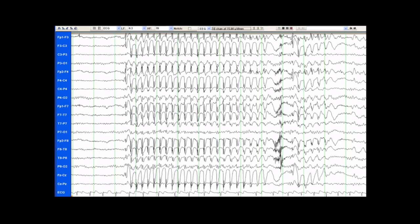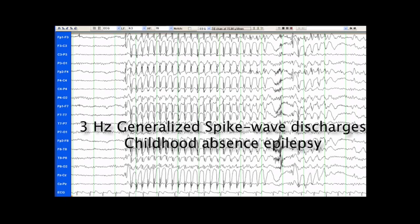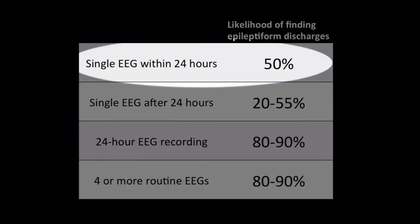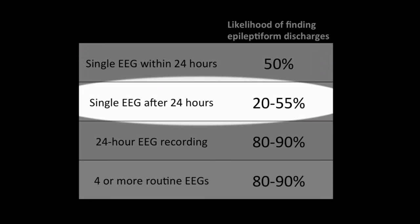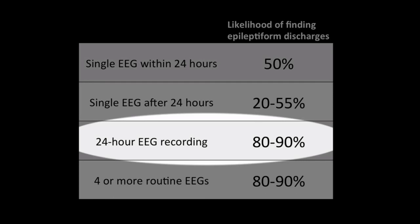These are the typical 3 Hz generalized spike-and-wave discharges seen in childhood absence epilepsy. Regarding diagnostic yield: in studies of patients with epilepsy, the likelihood of finding an epileptiform discharge in a single EEG within 24 hours of a first seizure is about 50%. If the EEG is done more than 24 hours after the seizure, the likelihood may drop somewhat, meaning half or more of patients with epilepsy might have a normal routine EEG.